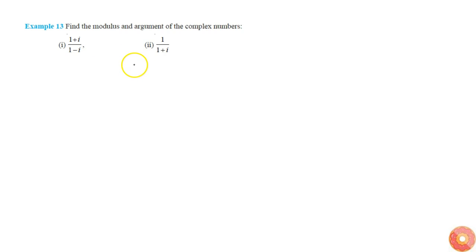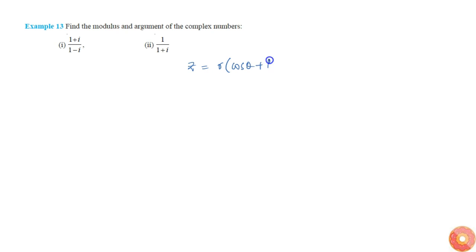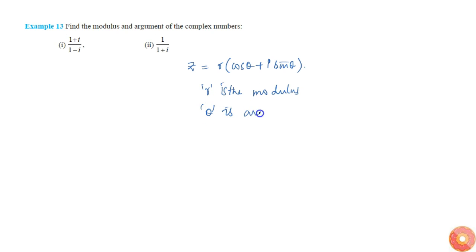In this question we are asked to find the modulus and argument of the complex number. First we need to write z in the form of a polar form, that is r into cos theta plus i sine theta. Once we bring it into this form, r is the modulus and theta, the angle, is the argument.